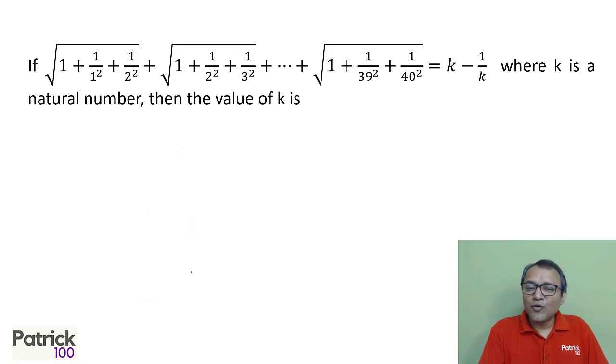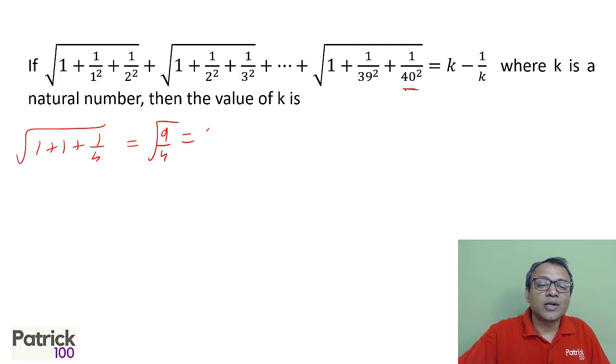Again, this is sort of a common thing in the exam in terms of where you have a large number 14. It becomes difficult to solve. We will take the smallest case first. Let us look at root of 1 plus 1 upon 1 square is 1, 1 upon 2 square is 1/4. You will get 9 upon 4 or you will get 3 upon 2. Writing in k minus 1 upon k form, you get 2 minus half. You can make the last term is 2. You get 2 minus half.